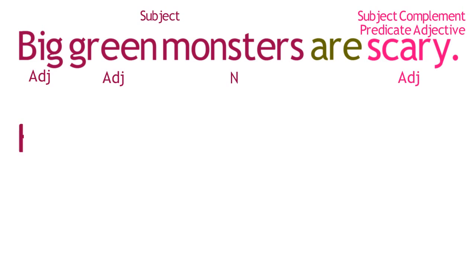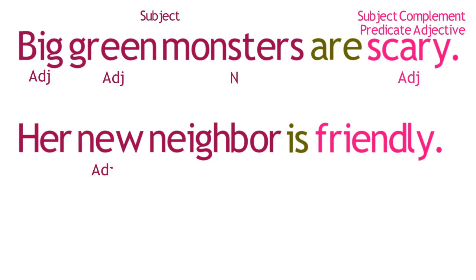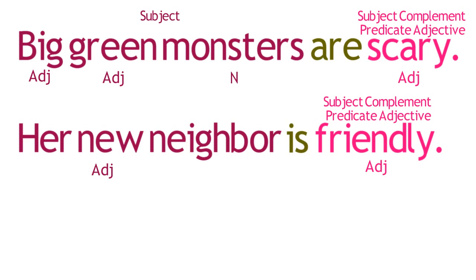As another example, in this sentence, both the adjective New and the predicate adjective Friendly modify and are dependent upon the noun Neighbor.